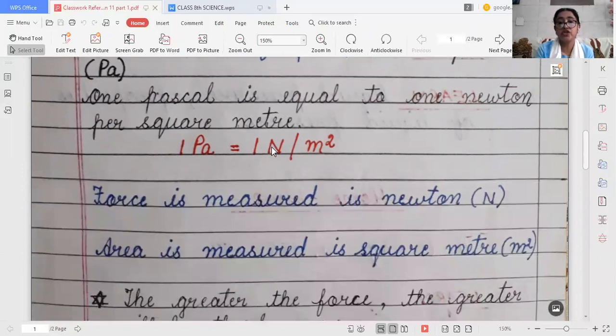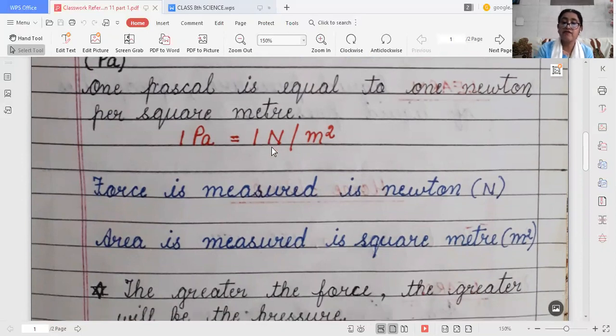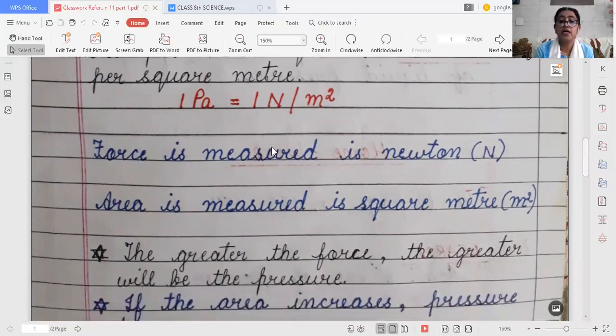Force is measured in Newton and area is measured in square meter. The greater the force, the greater will be the pressure. This is a very important point.